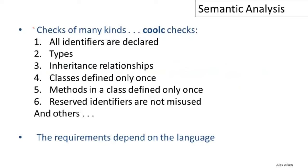So what does semantic analysis actually do? In the case of Cool, it performs checks of many different kinds. Here's a list of six classes of checks done by Cool. First, we want to check that all identifiers are declared and that any scope restrictions on those identifiers are observed. The Cool compiler must also do type checking, which is a major function of the semantic analyzer.